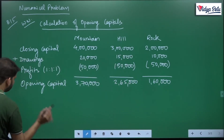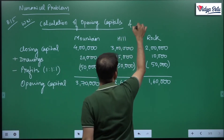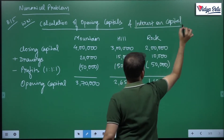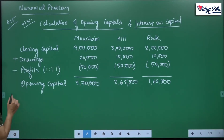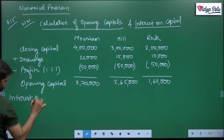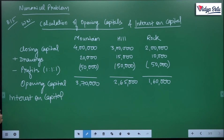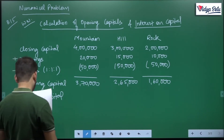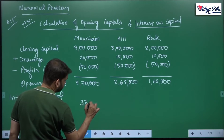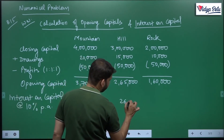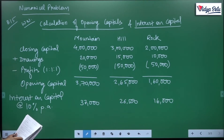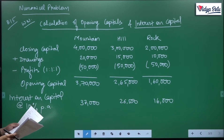We already have our opening capitals. Now we calculate interest on capital at the rate of 10 percent per annum. On 3,70,000 — 10 percent comes to 37,000. On 2,65,000 — 10 percent comes to 26,500. And on 1,60,000 — 10 percent comes to 16,000. So the answers are 37,000, 26,500 and 16,000.